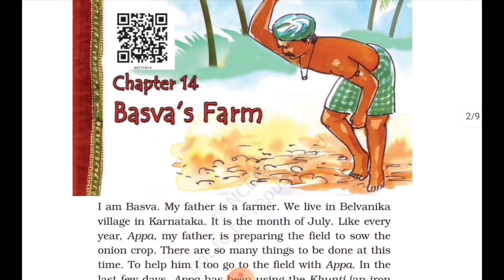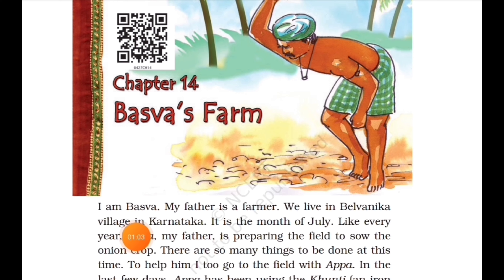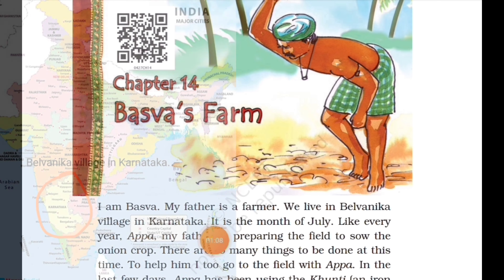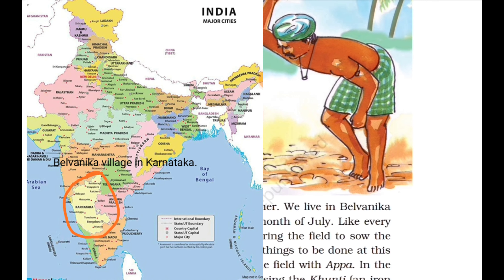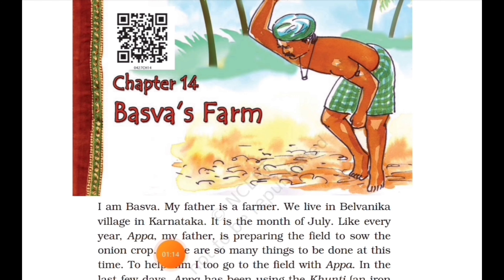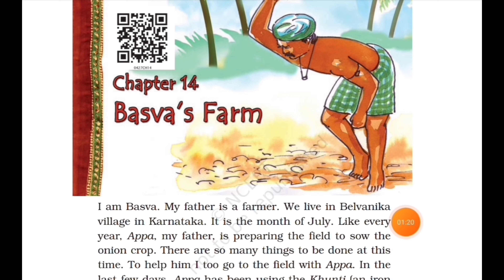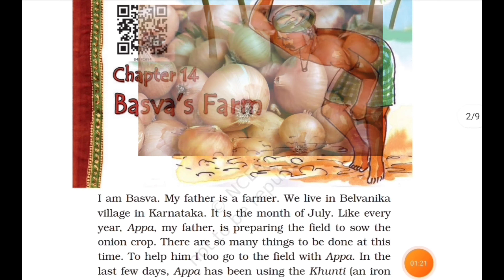Basfa's Farm. I am Basfa. My father is a farmer. We live in Belvanica village in Karnataka. It is the month of July. Like every year, Appa — my father — is preparing the field to sow the onion crop. The main focus of this chapter is the onion crop, and before sowing, lots of preparation is needed.